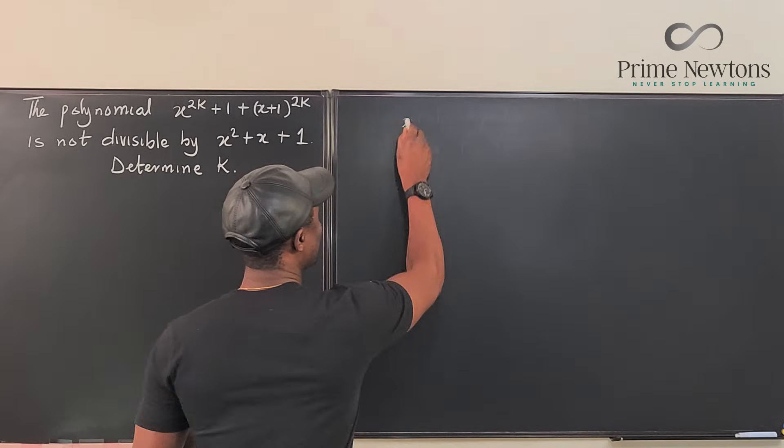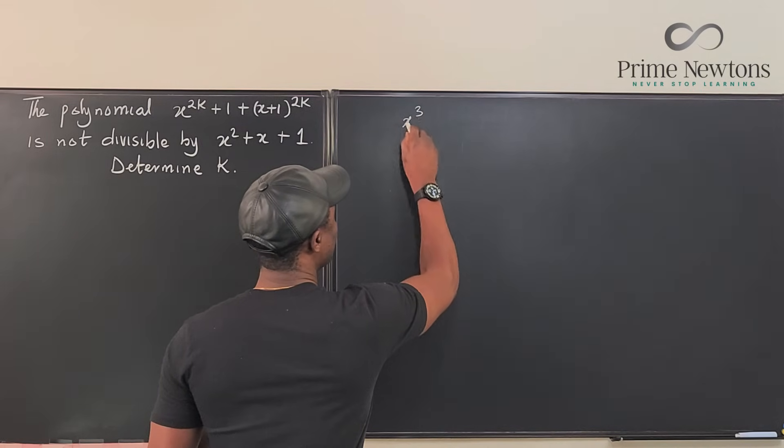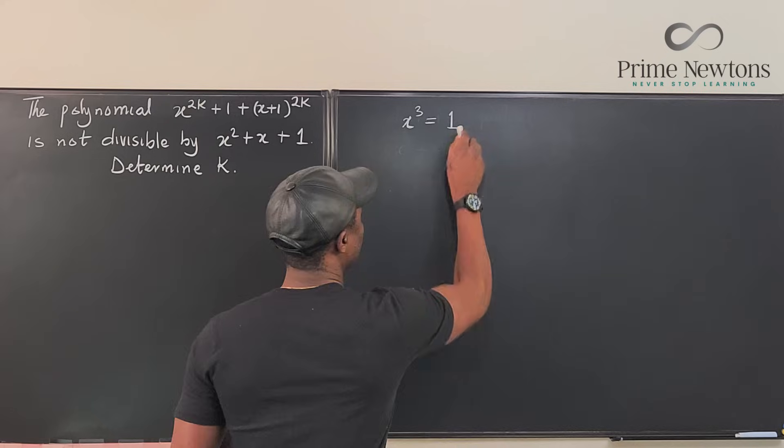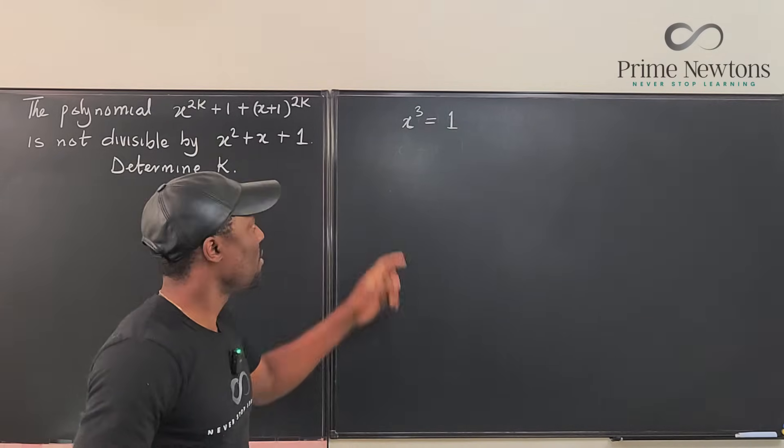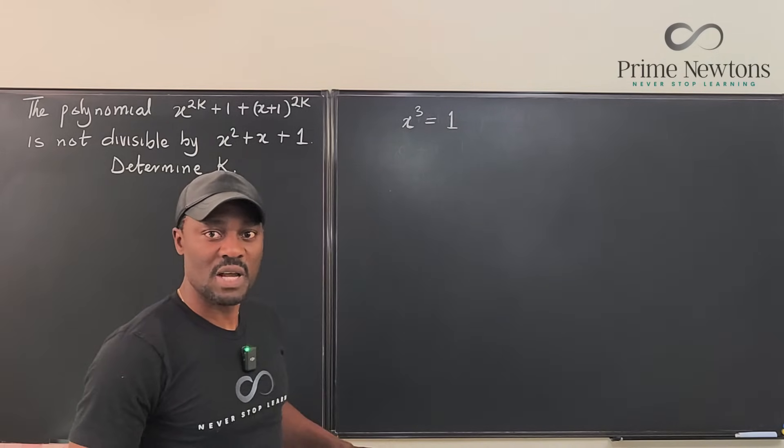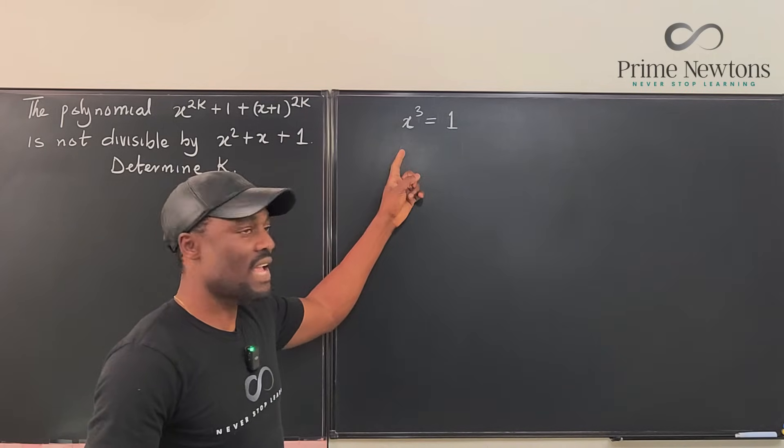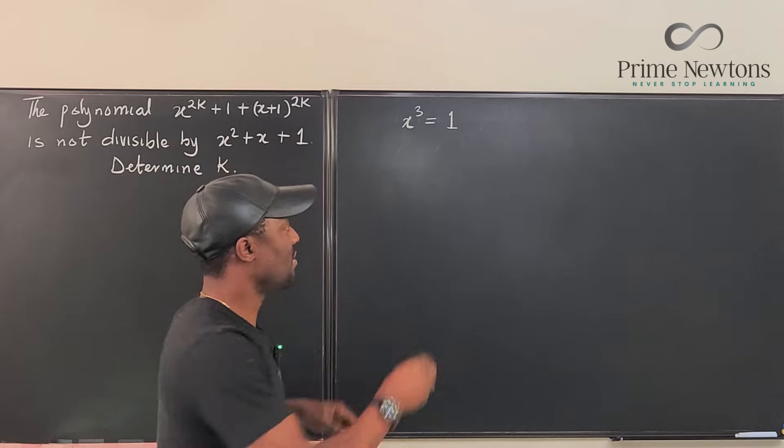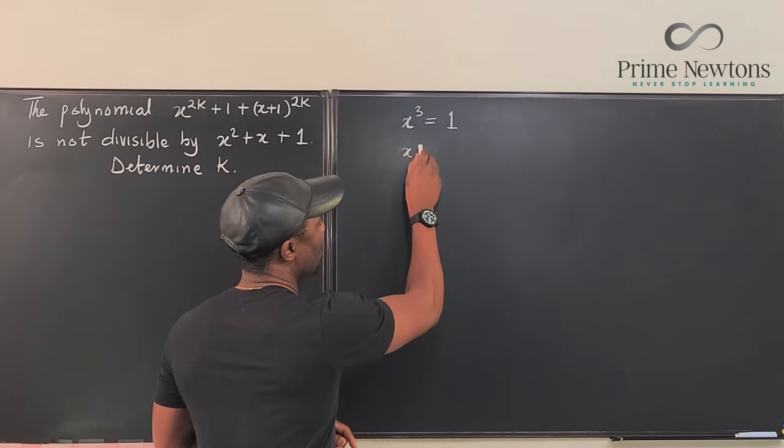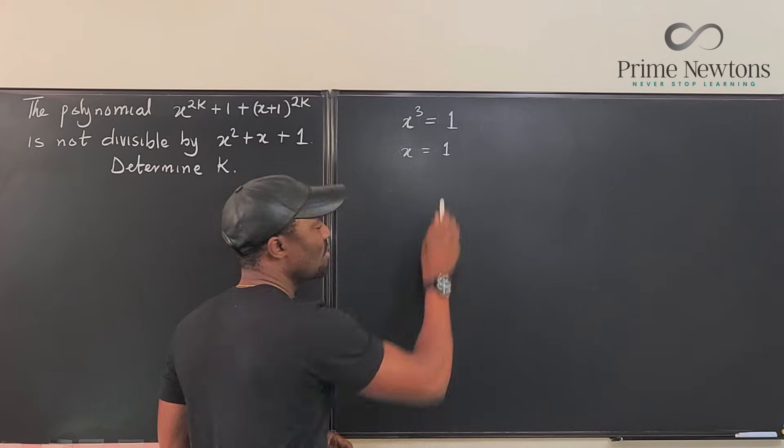Look at this. If somebody says x cubed equals 1, somebody will say take the cube root of both sides, right? Now, if you take the cube root of both sides, you're gonna get x here and you're gonna get 1 here. So, take the cube root to get x equals 1 because the cube root of 1 is 1.